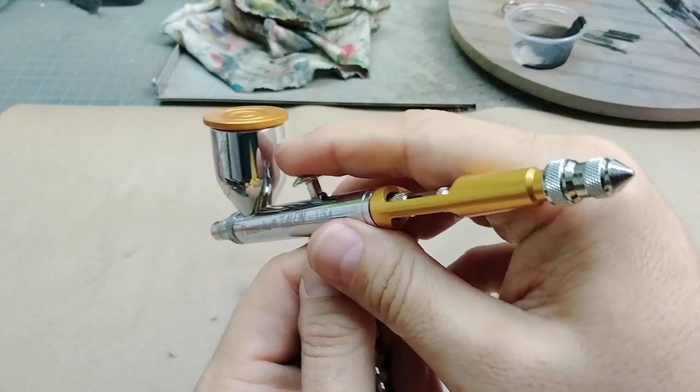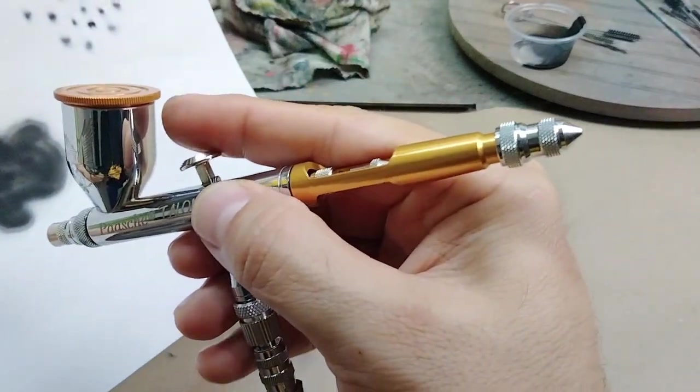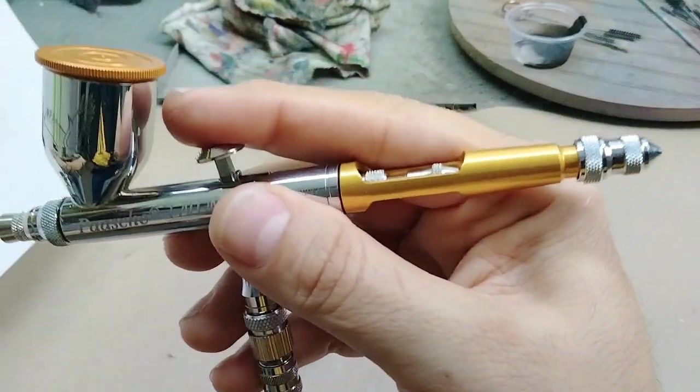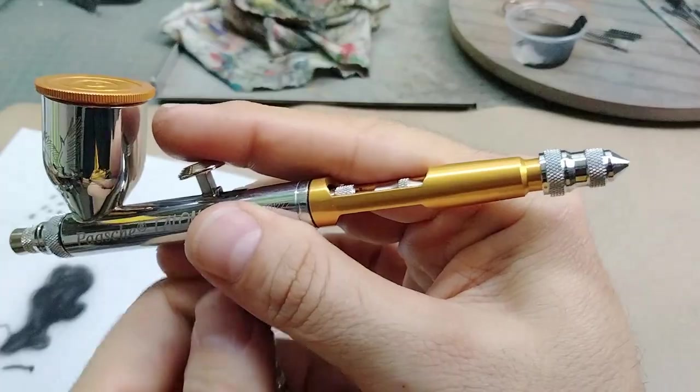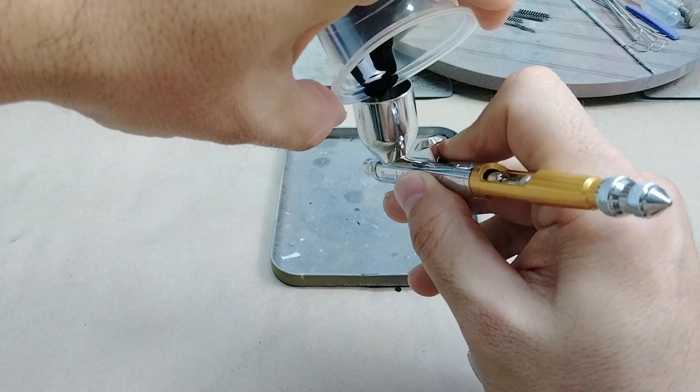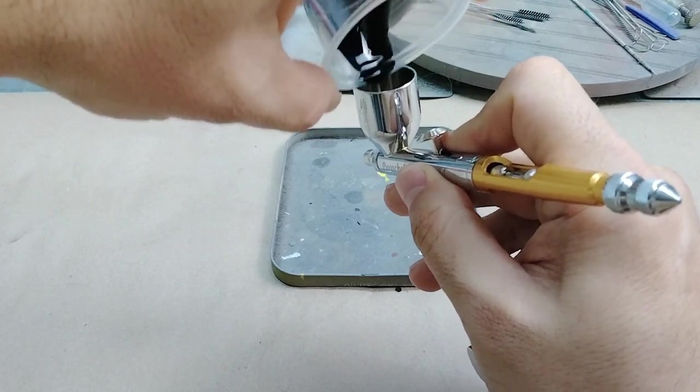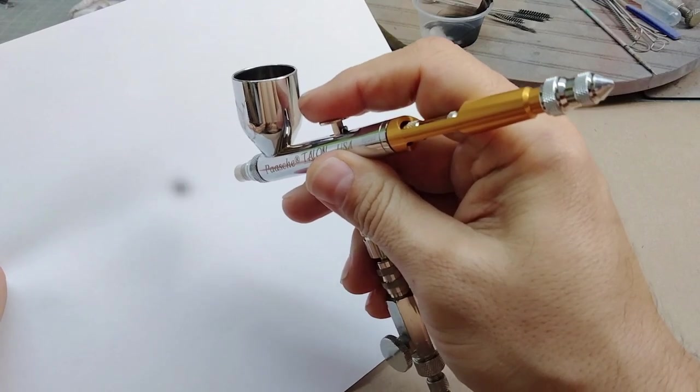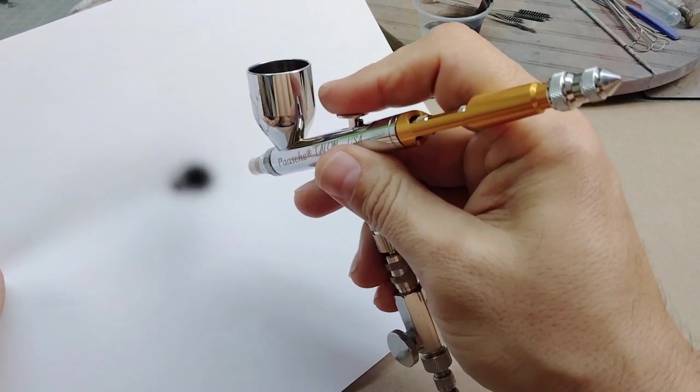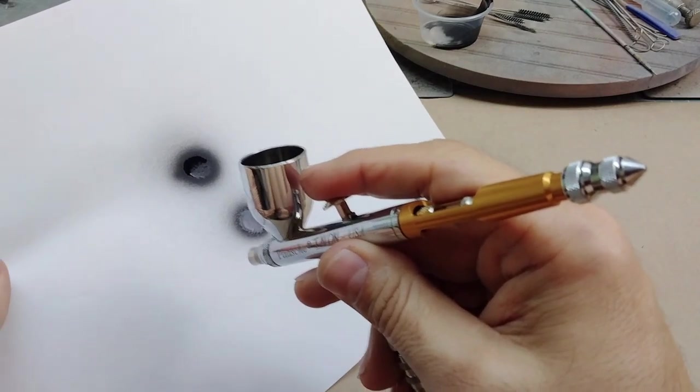Probably the most commonly used setup and favorite amongst most scale modelers is going to be the double action gravity feed airbrush. The biggest improvement over this design compared to the others is you no longer need air pressure to bring paint into the needle and nozzle. Just as the name implies, gravity is used to feed the paint into the body of the airbrush by mounting the cup at the top.